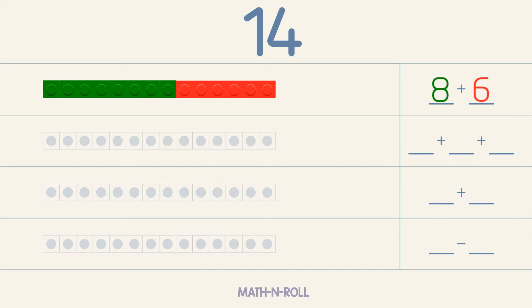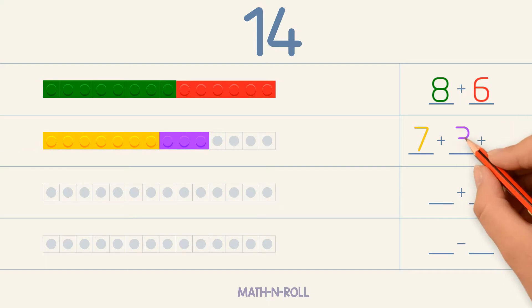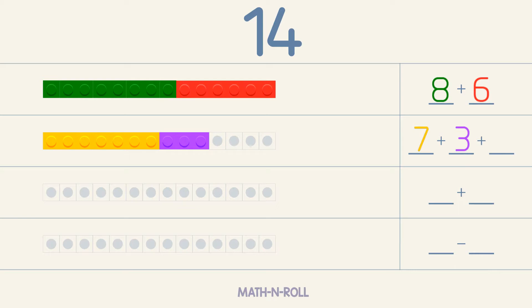Now let's try to make 14 using 3 numbers. Let's say we have 7. Now let's add another number, for example 3. We see that we need 4 more pieces to get 14. So we add 4. So 7 plus 3 plus 4 equals 14.